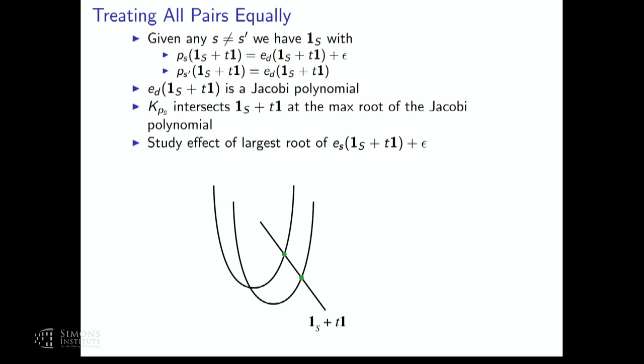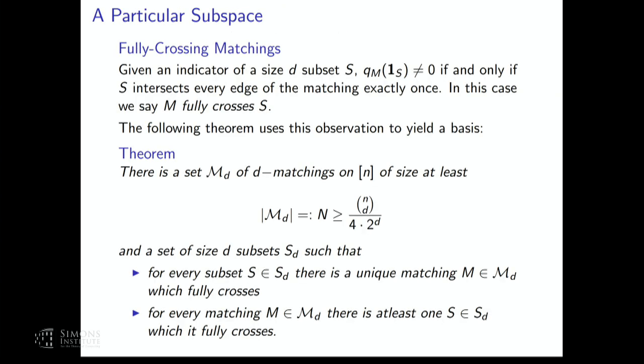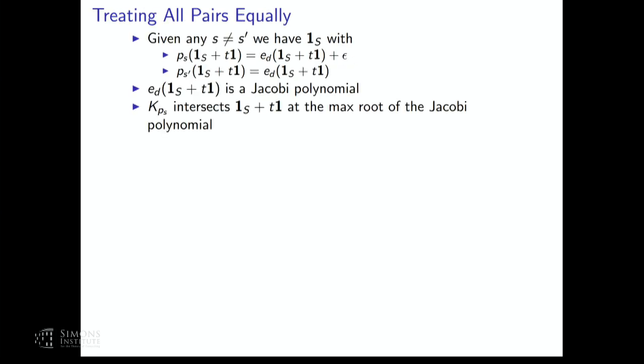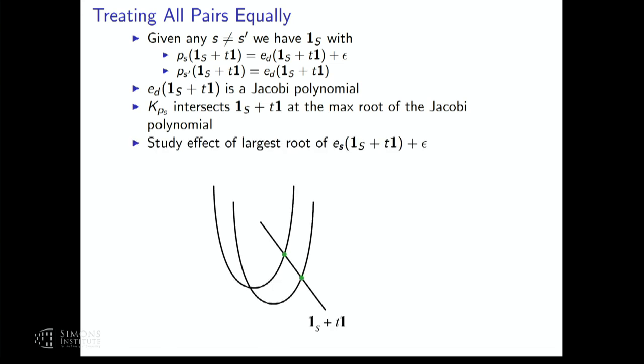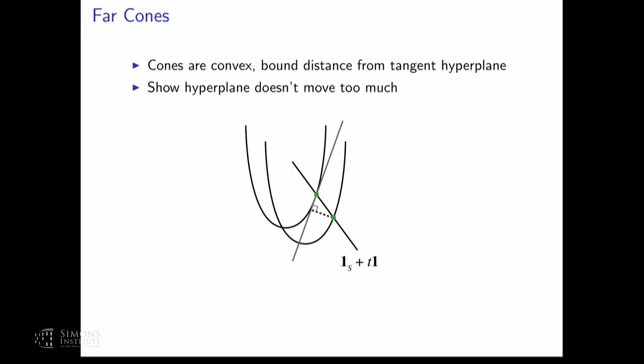The Jacobi polynomial appears when we look at these linear restrictions. So we have this picture where along a linear restriction we have a Jacobi polynomial with its max root at some point. For the other hyperbolicity cone, it's the max root of the Jacobi polynomial shifted by epsilon. I just need to study the effect on the largest root of the Jacobi polynomial when shifting by epsilon. The technical lemma says we can treat all pairs equally: if I take any two pairs of polynomials in my hypercube, I can view them the same way. Once I have distance on the restrictions — since all pairs look the same — I only have to analyze one setup, then show that when I project and find the tangent plane to my convex cone, the hyperplane didn't move too much.